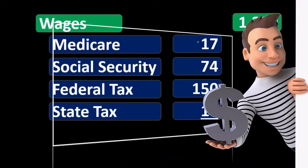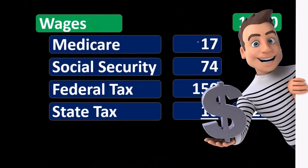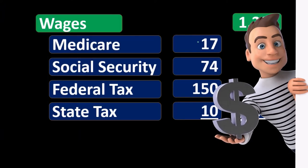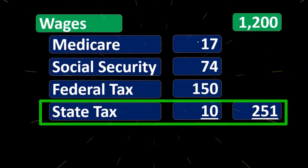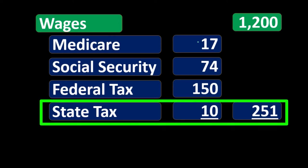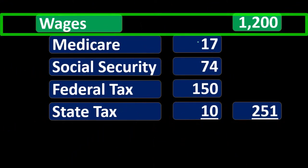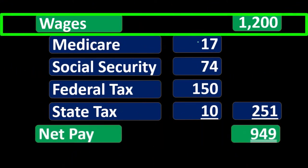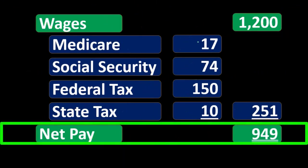If we add up those deductions from the wages — the $17, the $74, the $150, the $10 — that would be $251 that has been taken away from the amount earned by the employee of $1,200, meaning that the net pay would be $949.